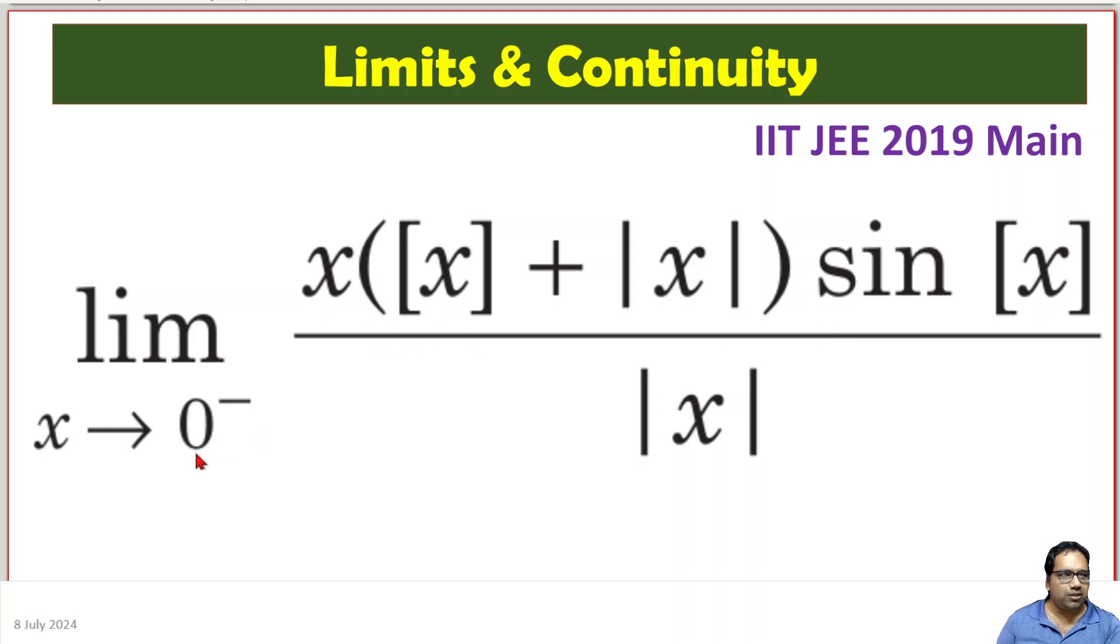When x is like -0.99 or something, greatest integer function of x, this becomes minus 1, right? Between minus 1 and 0, this is minus 1.